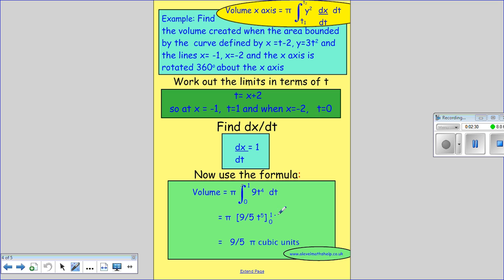So you sort that out. Remember you put this one in first and then this one in second and then take them away, but actually the 0 doesn't give you anything, so you get 9/5 π cubic units. I hope that's helpful.